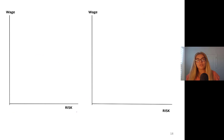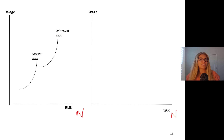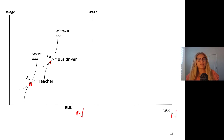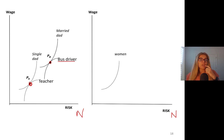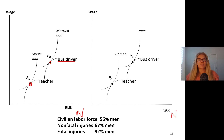Let's draw this out in terms of risk and negative aspects of the job. A single dad — the most risk averse — tends to sort into jobs like teaching. A married dad — less risk averse — might sort into a job like bus driver, because driving is inherently more dangerous. So for women who are more risk averse versus men who are more risk loving, you see these kinds of occupational differences playing out.